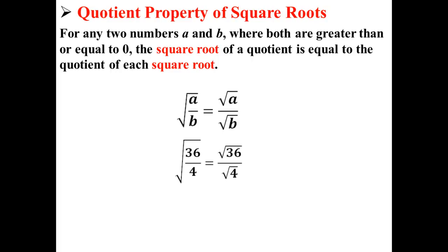Here we have an example. The square root of 36 divided by 4 is equal to the square root of 36 divided by the square root of 4.